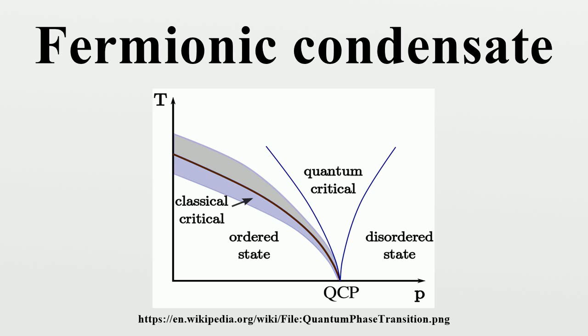Unlike Bose-Einstein condensates, fermionic condensates are formed using fermions instead of bosons. The earliest recognized fermionic condensate described the state of electrons in a superconductor.